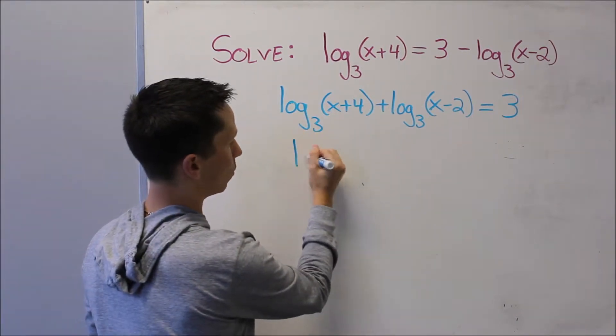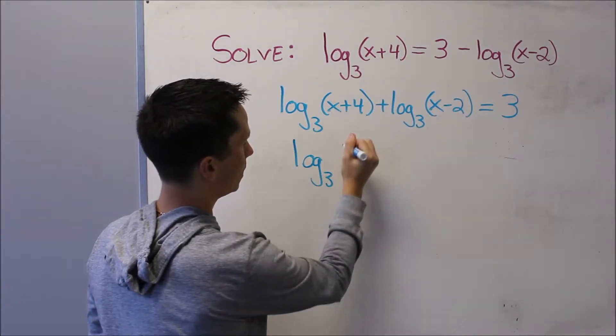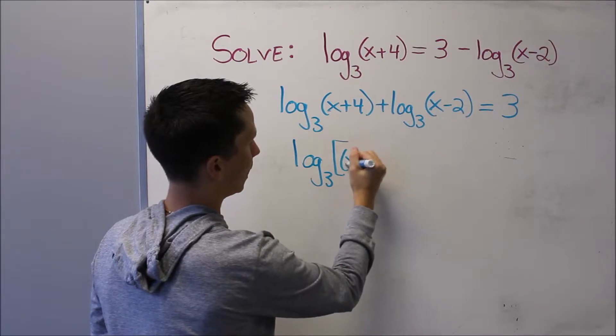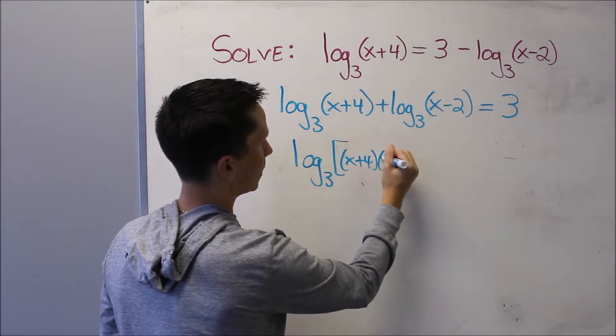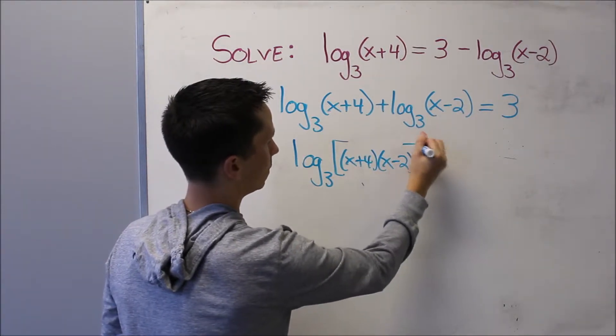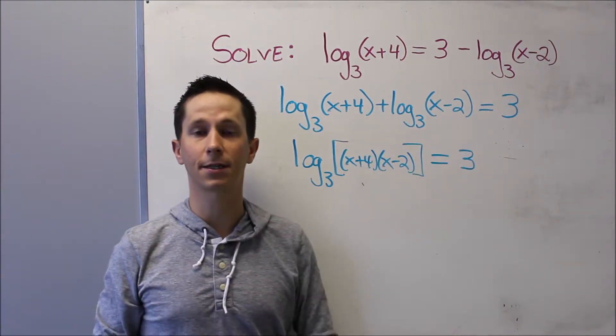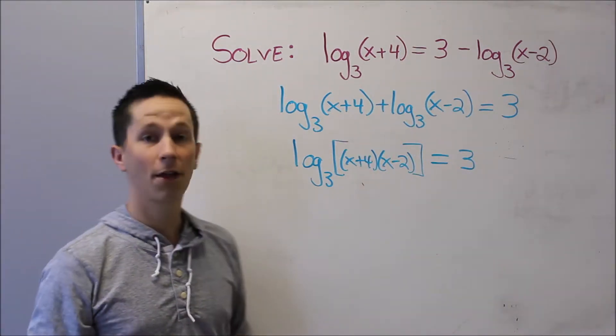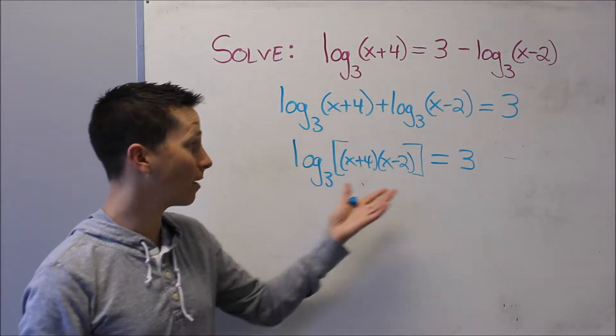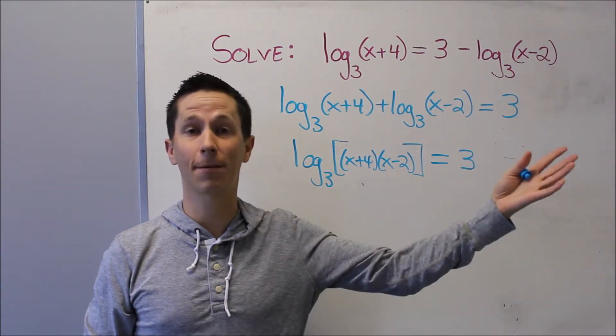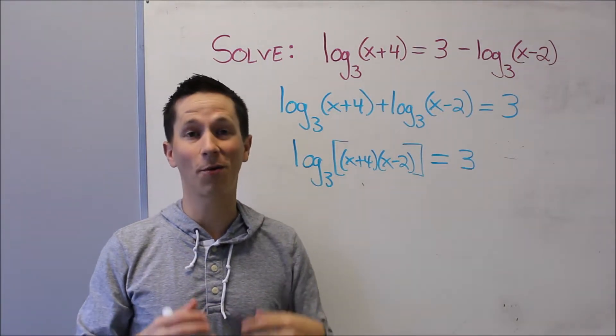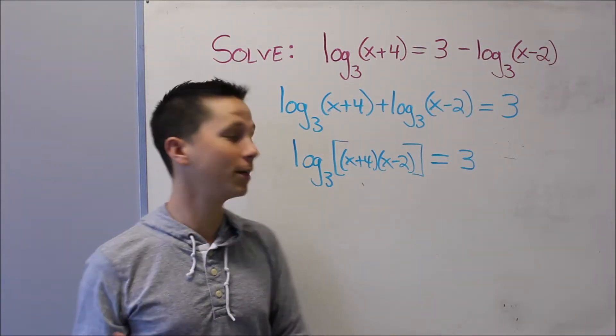I'm going to combine this to one logarithm, so it's log base 3 of (x+4) times (x-2), and it still equals 3. So all I've done is collapse this left side into one logarithm. The reason we do that is so now we've got a logarithm equaling some number, and we know from previous videos that we always want to change the form at this point.